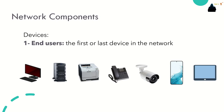Network components: we have three basic network components. Any network infrastructure contains three types of network components, which are devices — including end users — media, and services. End users and end devices are the first network component. End devices are either the source or destination of a message or data transmitted over the network — in other words, the first or last step in the network.